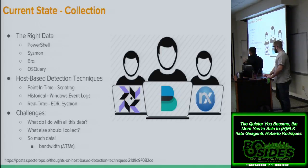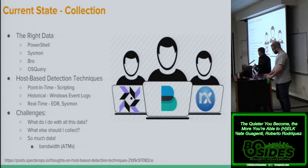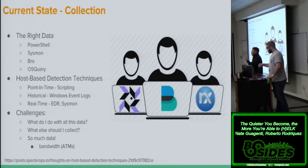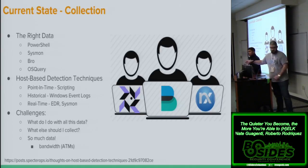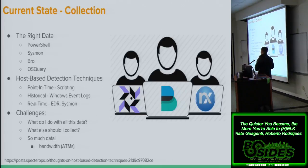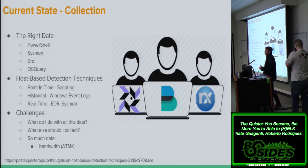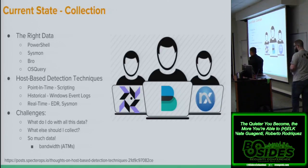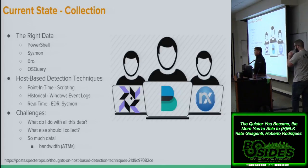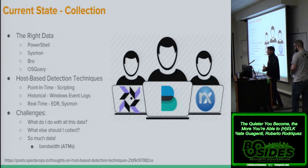There is still some confusion around the specific techniques you can use to collect data. There's a paper by Jared Atkinson that talks about three different ways to pull data available in your environment. The first is at-time, requiring scripting capability. Historical time is just your Windows event logs. Real-time requires an agent like Sysmon or EDR. A big challenge is knowing what else to collect and how to prioritize it.